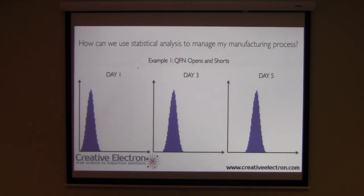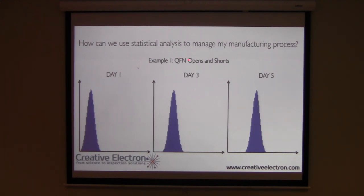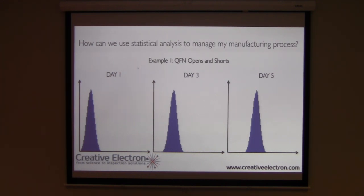You might think you'll figure it out during final testing. But this example shows that if you try to catch a problem at the last stage in your manufacturing process, it might be too late. Even though you caught the problem on day seven, by day three you're already shipping some subpar product. Who's to say that on day three you're passing product in testing but it's going to fail later in the field? That's why it's so important to understand the performance of your process, so that you can understand when you're deviating from it.